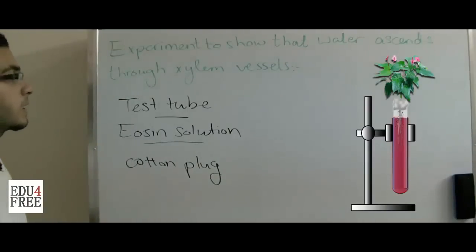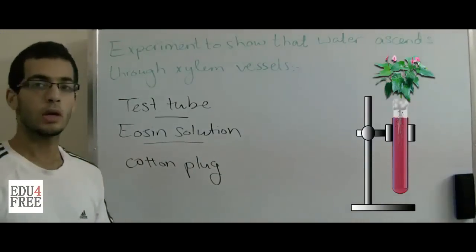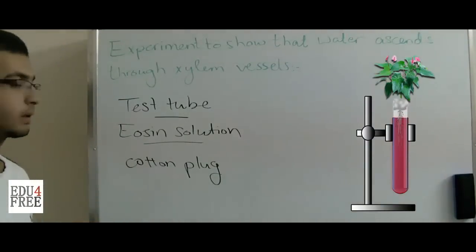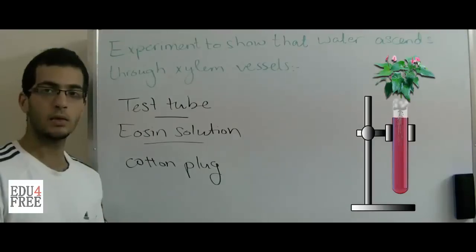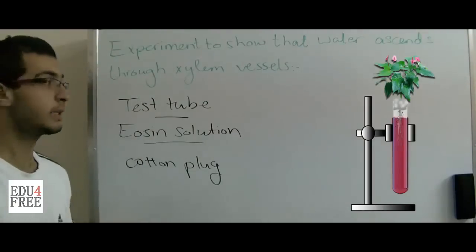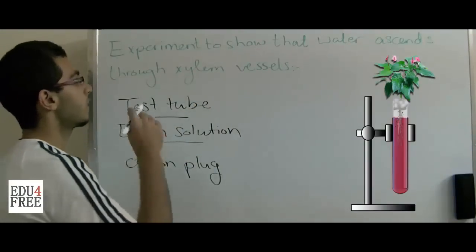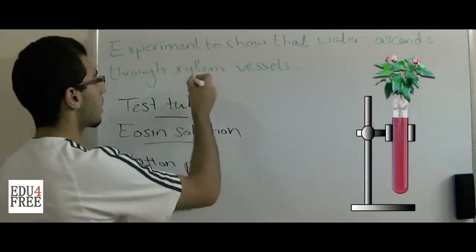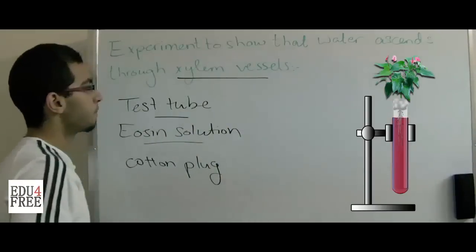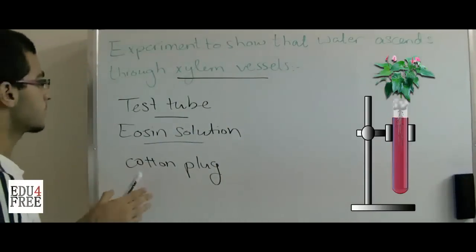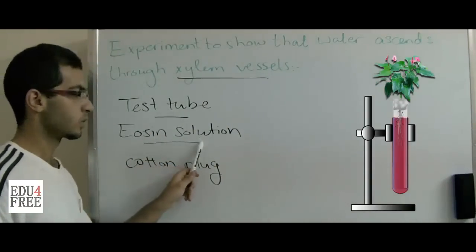The next step is that we are going to cut the stem of the plant transversally in order to see what's inside. We will find that the xylem vessels are the only vessels which are pigmented by the eosin solution color.